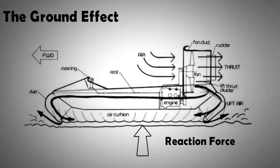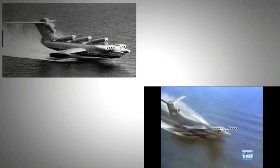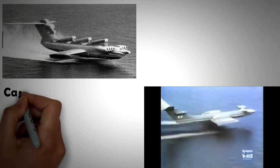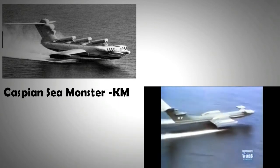However, the higher they fly, the less efficient they become and the more energy they consume. One of the largest ground effect vehicles ever made was the Caspian Sea Monster or simply the KM. It had a length of 92 meters and a take-off weight of 544 tons.